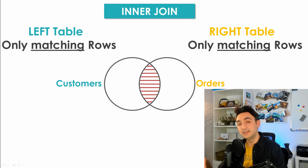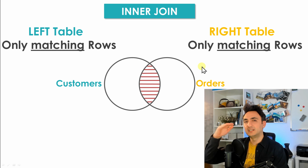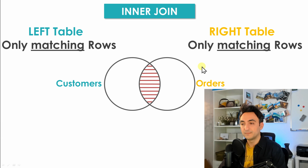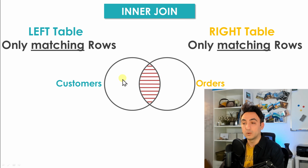Let's start with the first type: the inner join. The inner join is the most commonly used type of join among developers, and it is widely used in SQL statements. An important aspect to understand with SQL joins is that there is always a left table and a right table, depending on how you write your script. In the inner join, the left table is customers and the right table is orders. With inner join, only the matching rows between the two tables will appear in the results — all non-matching rows are excluded.